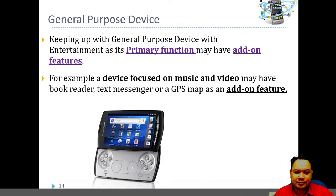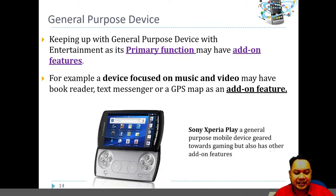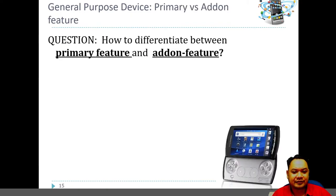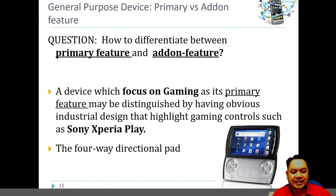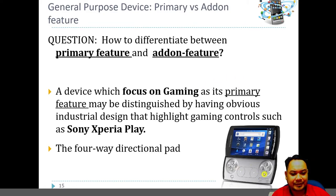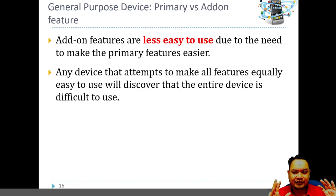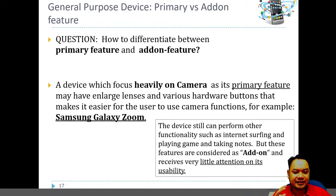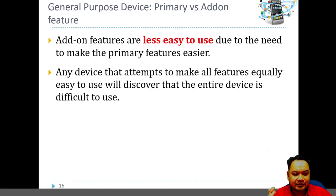This is an example of a general purpose device with a primary function — the Sony Ericsson Xperia Play. This device focuses on gaming as its primary feature, which is distinguished by obvious hardware or industrial design that highlights gaming controls, such as a keypad or four-way directional pad. An add-on feature on the Sony Xperia Play would consist of less frequently used applications such as reading books, watching video, or surfing the internet.